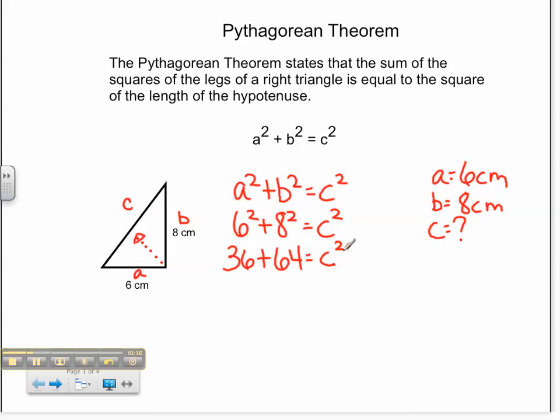I know that 36 plus 64 is 100. Therefore, I know that c squared must equal 100. If I know that c squared is 100, in order to find out c, I must find the square root of 100. Therefore, c is 10 centimeters. What I would of course go back to do is plug in my values and check it in my original equation.